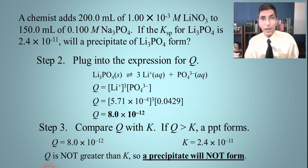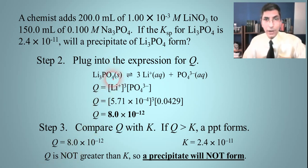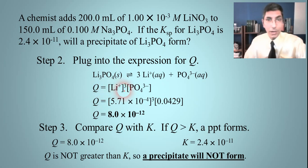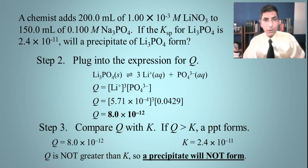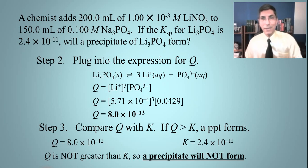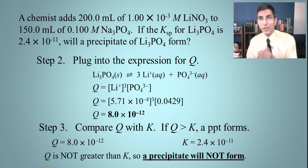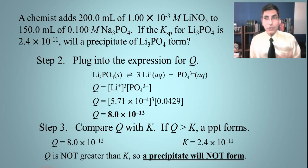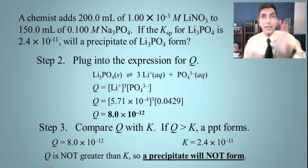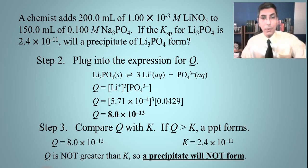The idea is to compare Q with K. There's a lot of chemistry involved: you need to find moles using solution stoichiometry, write an equilibrium constant expression, calculate Q, and then compare it with K. This would be a very good free response question on the AP exam. If you've learned something, please hit the like button — that's the only way YouTube will share my videos with other chemistry students. My name is Jeremy Krug. I've been teaching AP Chemistry for over 20 years, and I want you to get a five on your AP Chemistry exam. Thanks for watching.